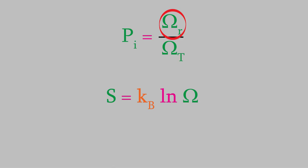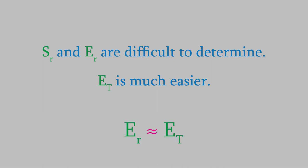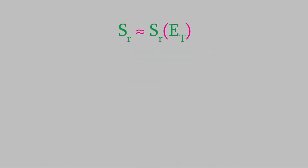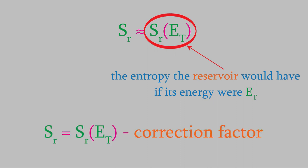Well, remember this equation that was proposed by Ludwig Boltzmann. This tells us that the number of microstates is connected to the entropy. We're trying to find a way to replace this term in the probability equation, so maybe we can start by thinking about the entropy of the reservoir, S sub r. Unfortunately, properties of the reservoir like S-R and E-R are very difficult to measure. However, it turns out that the total energy is much easier to determine. And since the reservoir is so much larger than the system, E-R is very close to the total energy, E-T. That gives us a good way to approximate S-R, the entropy of the reservoir. S-R is close to what it would be if the energy of the reservoir was the same as E-T. In order to get the exact value of S-R, we need to use a correction term that will subtract a little to account for the fact that the energy of the reservoir is a little less than E-T.